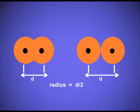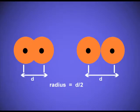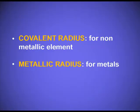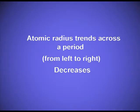Atoms can be bonded through a covalent bond, an ionic bond, or it can be a metal. When covalently bonded we call it covalent radius, and when it is a metal we call it metallic radius. From the picture you can see that the two atoms are covalently bonded and the two black dots are the nuclei. The distance between the two nuclei is d and half of d is the atomic radius. Covalent radius is the term used for non-metallic elements and metallic radius is used for metals. Now, the trend of how atomic radii varies along a period and along a group.